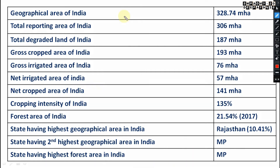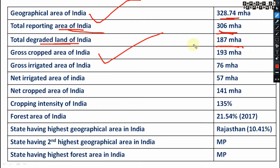As you can see, the total geographical area of India is 328.74 million hectares. The total reporting area of India is 306 million hectares. The total degraded land of India is 187 million hectares.